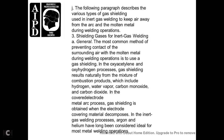The following paragraphs describe the various types of gas shielding used in inert gas welding to keep air from the arc and molten metal during welding operations. Shield gases for inert gas welding: the most common method of preventing surrounding air from contacting the molten metal during welding uses gas shielding. Gas shielding results naturally from combustion products including hydrogen, water vapor, carbon monoxide, and carbon dioxide in the covered electrode metal arc process.